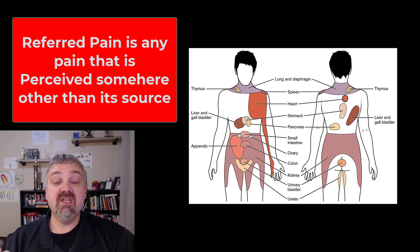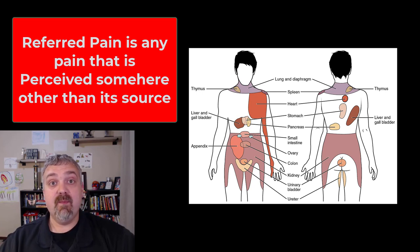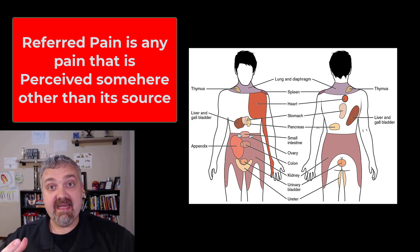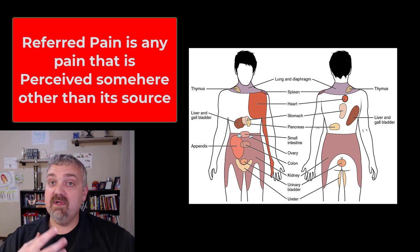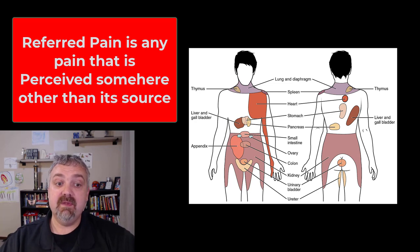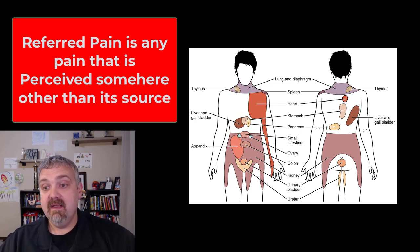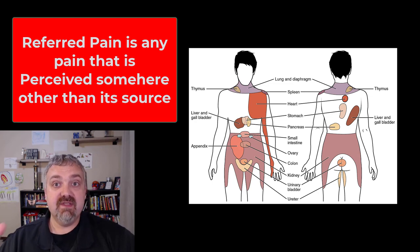Another example of referred pain would be phantom limb pain, where someone that doesn't have a limb — they've lost a limb or even were born without it — they're feeling pain in a limb that doesn't exist. So clearly that's an example of referred pain as well. Referred pain is any time you're having pain and you're feeling it in a different location than where the actual pain is.